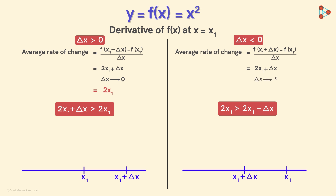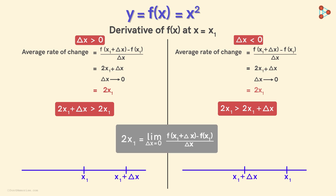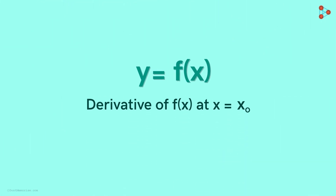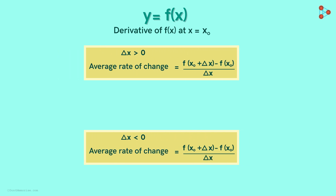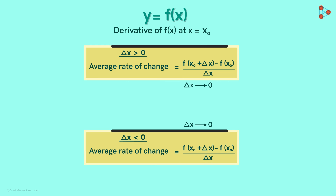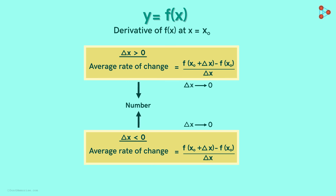Now when delta x tends to zero, both these average rates will approach the same limit: 2 times x1. We can conclude that the derivative of this function at x1 is equal to 2 times x1. So, to find the derivative of a function at a particular value of x, we have to find the average rate in two cases — when delta x is greater than zero and when delta x is less than zero. When delta x tends to zero, if both these average rates approach the same number, then that number is the derivative of the function at that particular value of x.